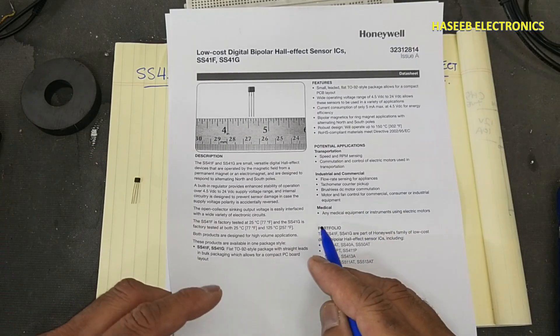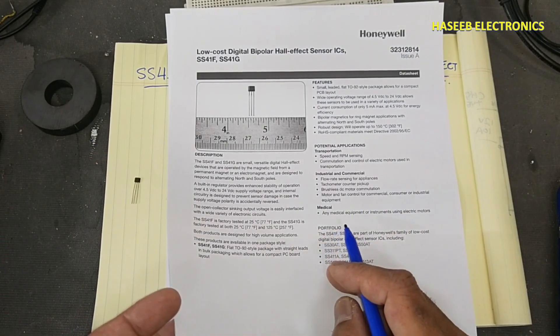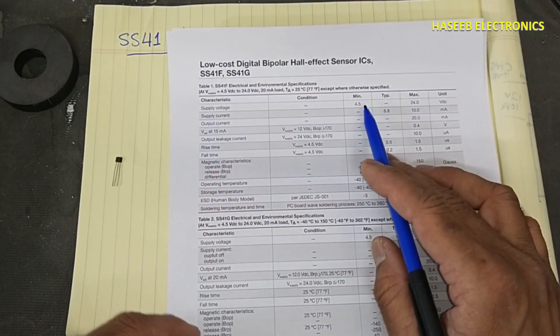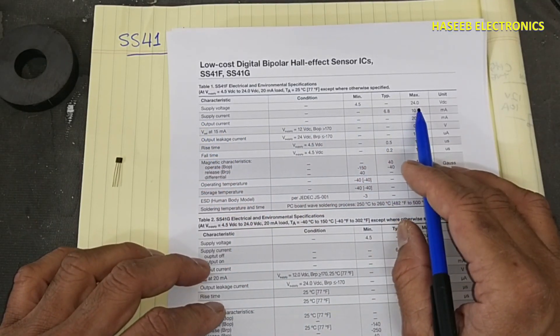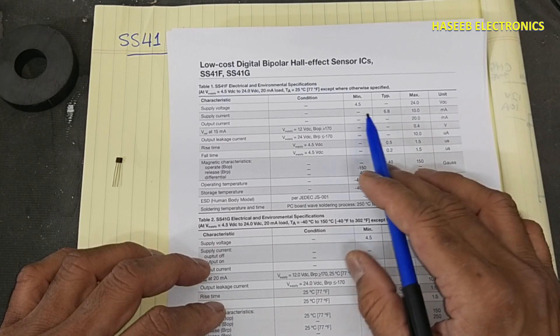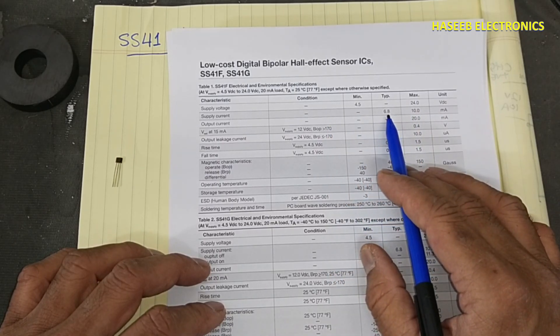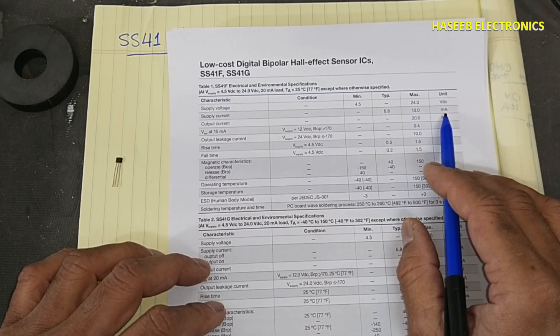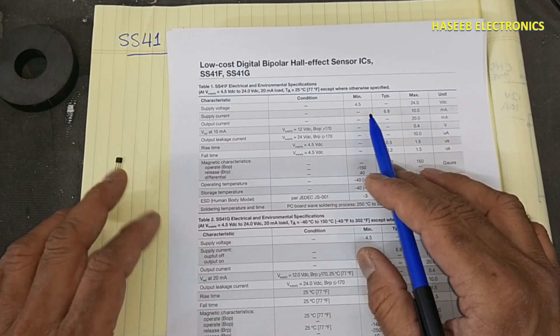It is also used in fuel pumps and medical equipment and instruments using electric motors. It can be supplied from 4.5 volts to 24 volts, and the nominal supply current is 6.8 milliamperes, which is its chip current.